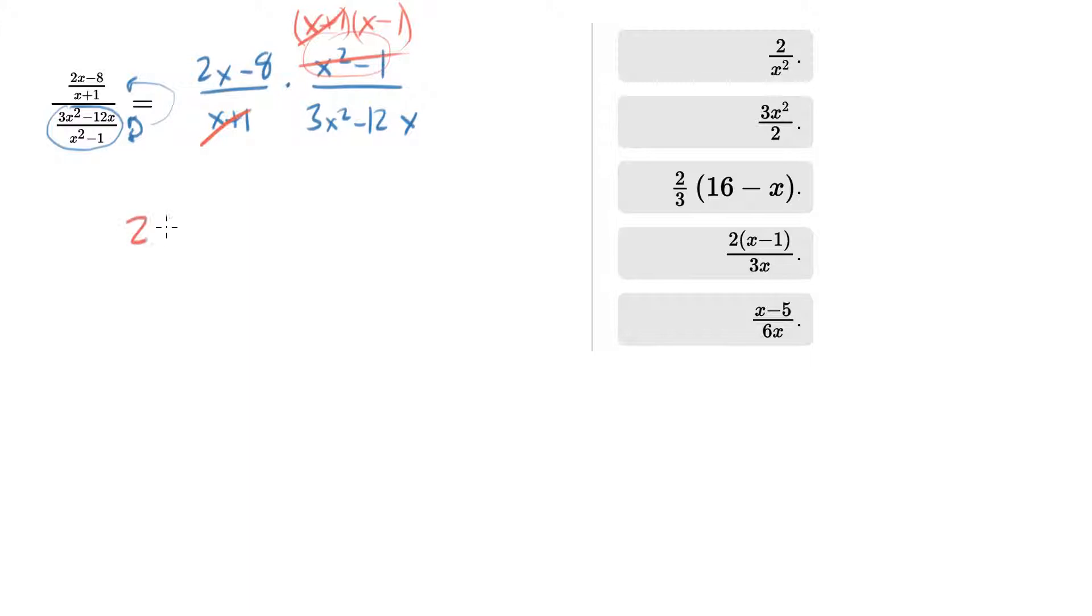So we end up with 2x minus 8 times x minus 1 over—let's pull an x out of this guy—we have x times, let's actually pull a 3x out, we end up with x minus 4.